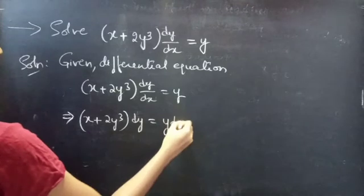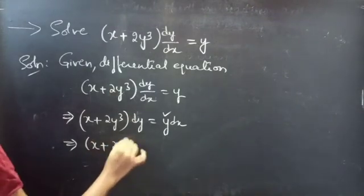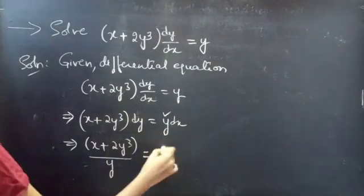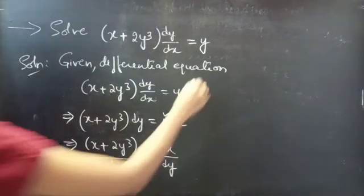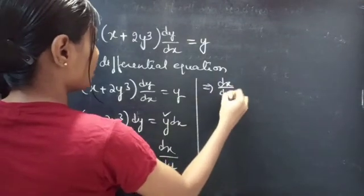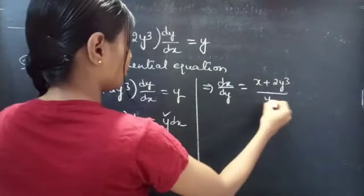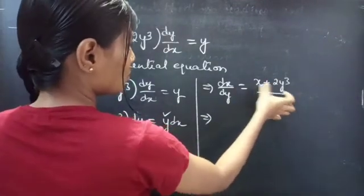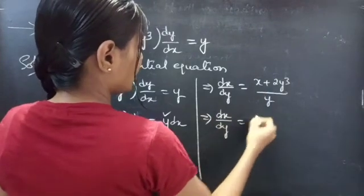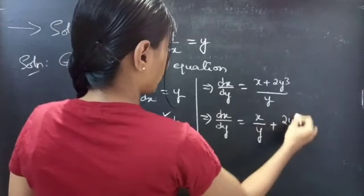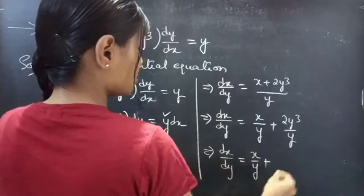We can write this as (x + 2y³) dy = y dx. Now bring y to the LHS. You will get (x + 2y³)/y = dx/dy. So we have dx/dy equals (x + 2y³)/y. If you notice, the numerator of the RHS has two terms and the denominator has one term. So we split the expression into two terms: dx/dy = x/y + 2y³/y.